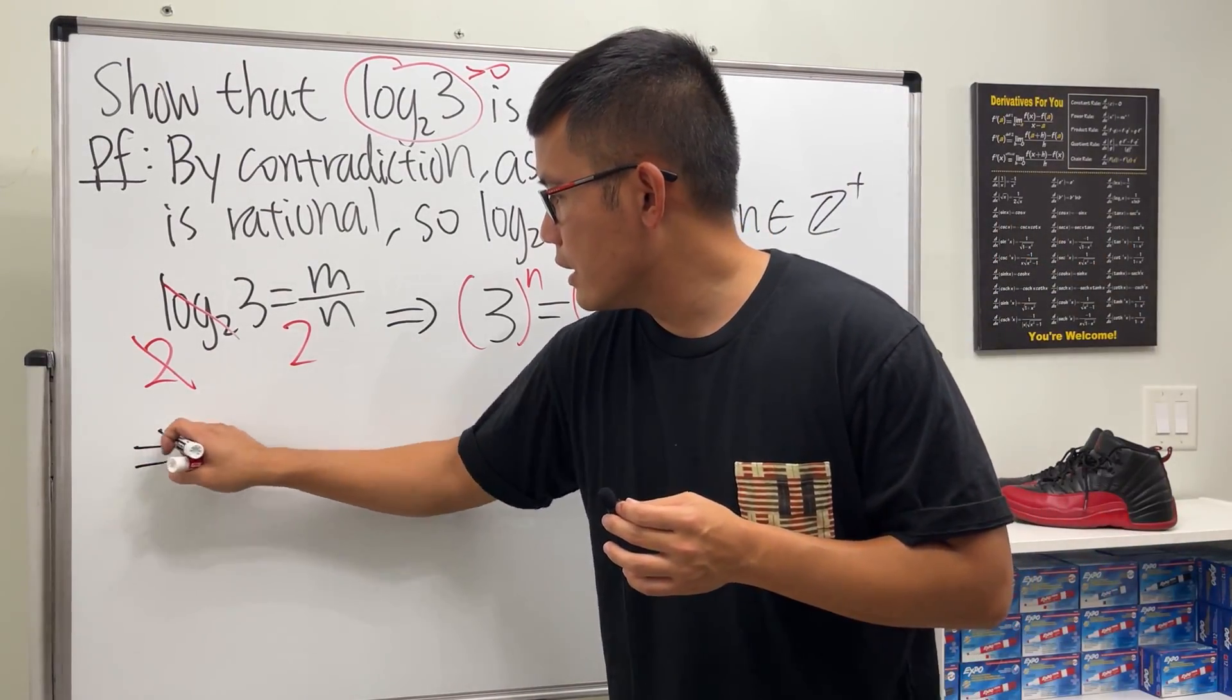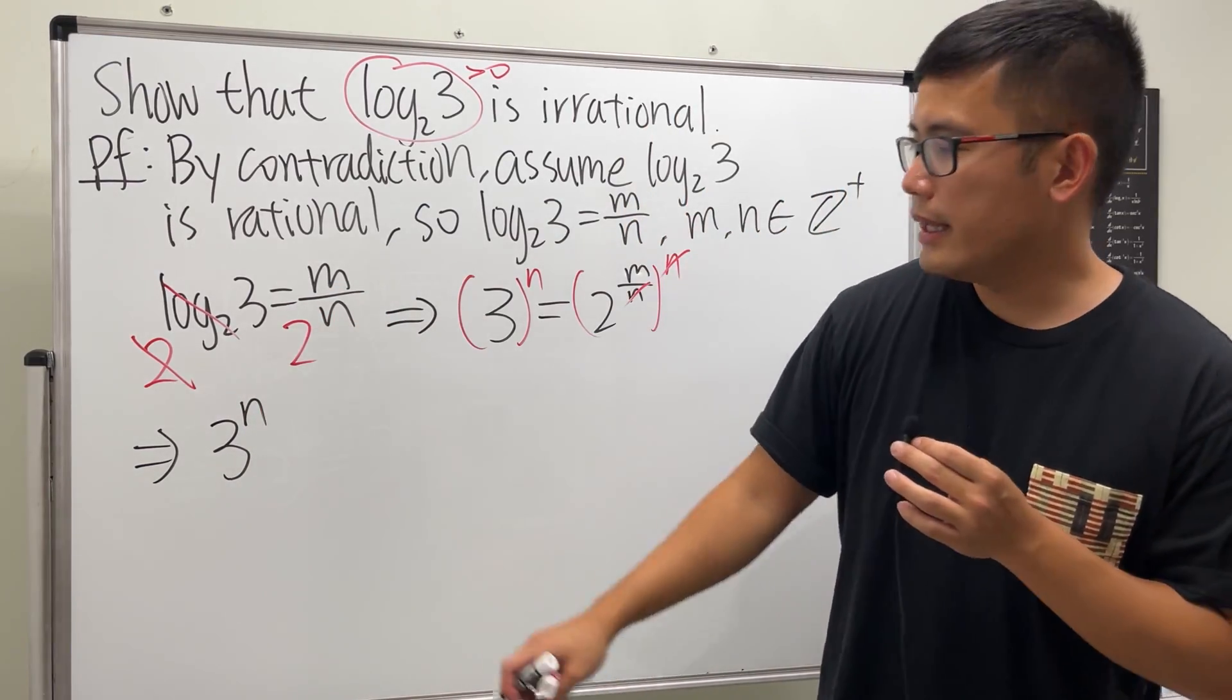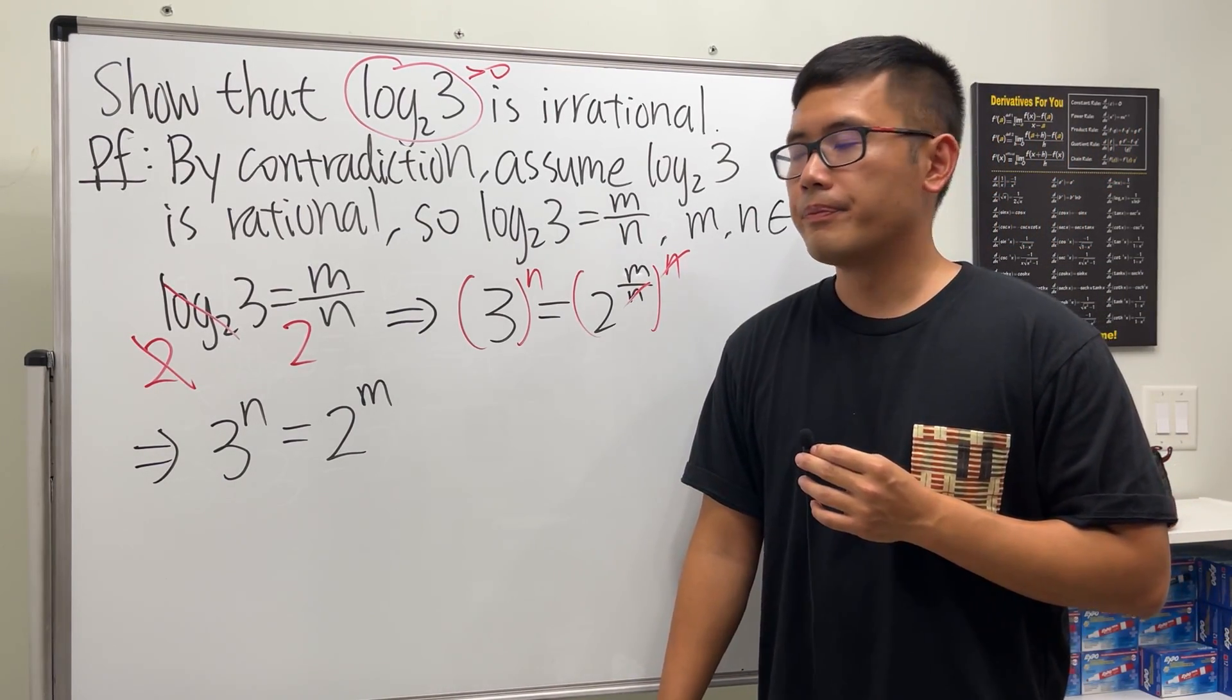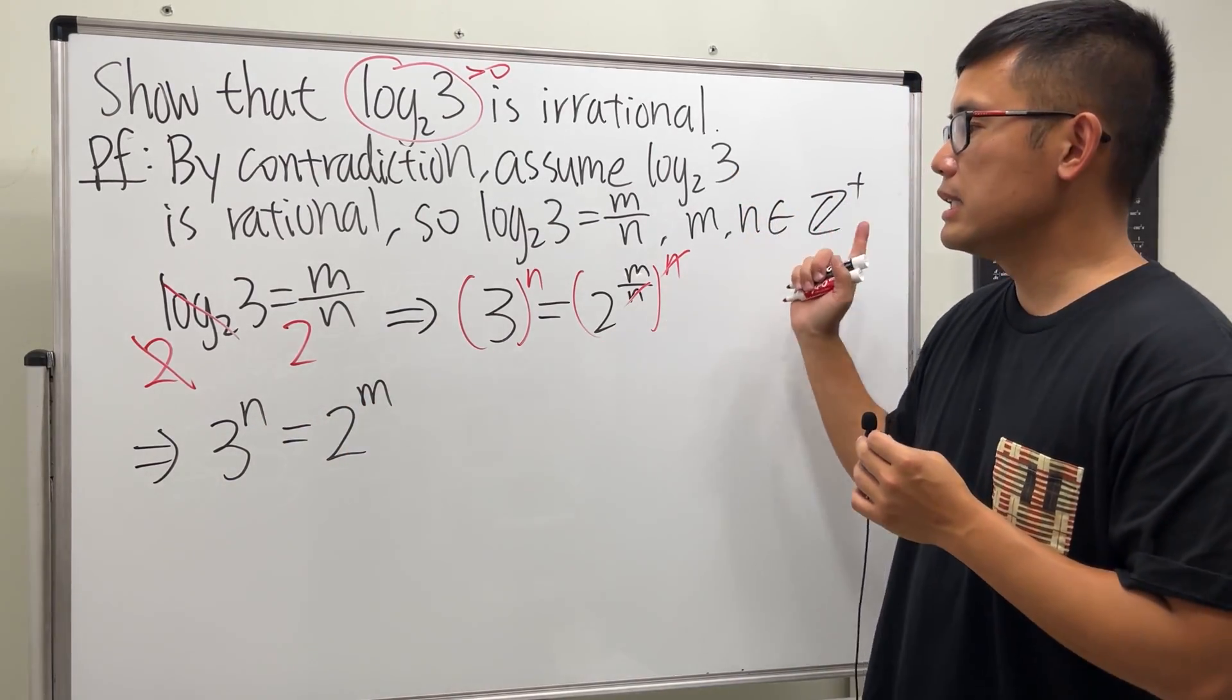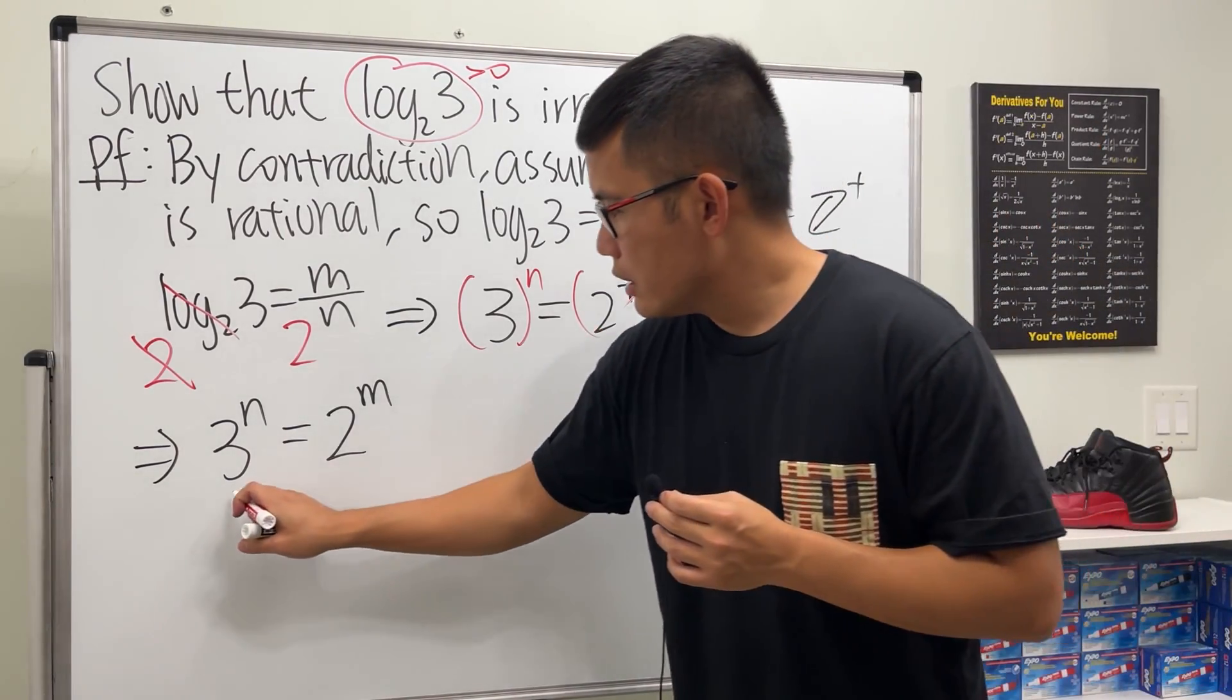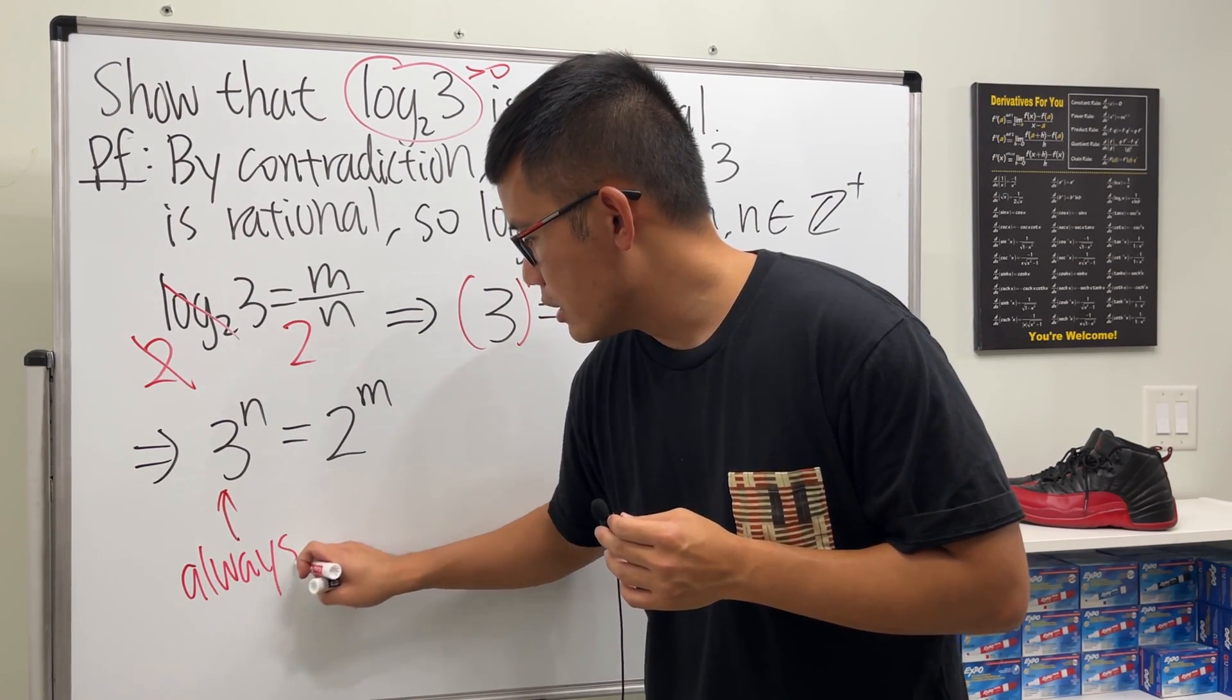So what we are really going to get is the left-hand side is 3 to the n's power, and then the right-hand side is equal to 2 to the m's power. And now we have an issue. Keep in mind, n and m are both positive integers. So when we have 3 raised to an integer power, a positive integer power, this right here is always going to be odd.